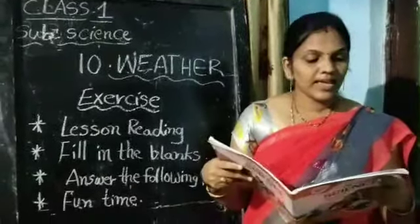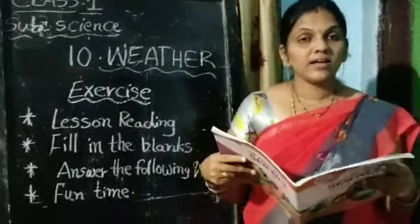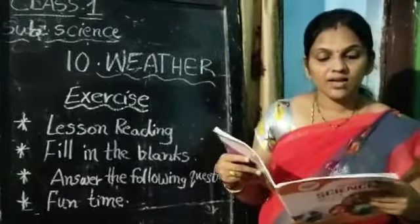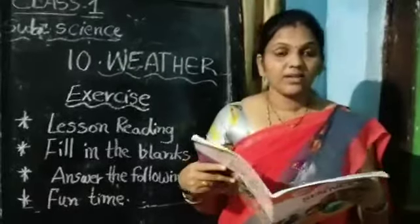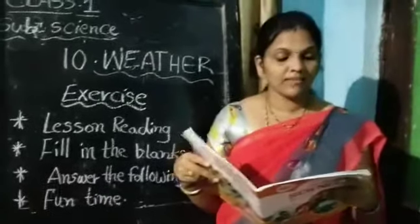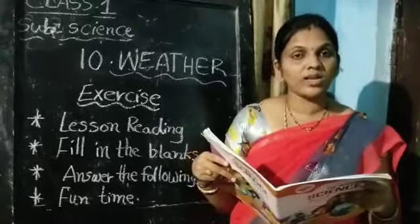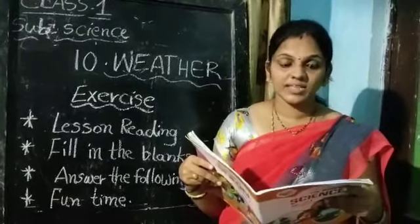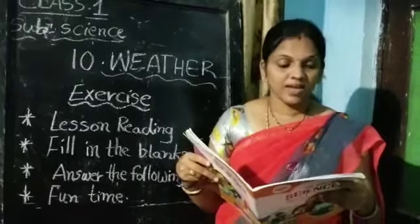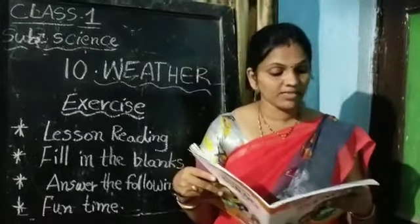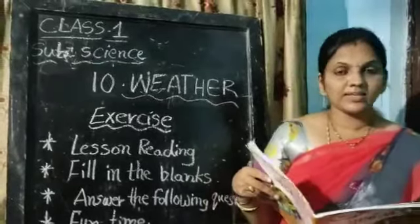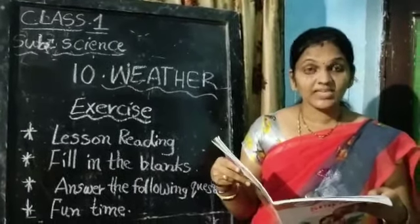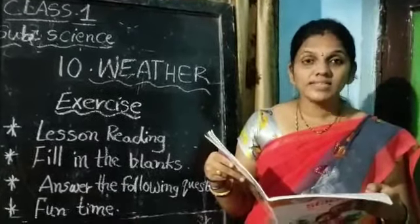The air around the earth is called weather. The sun, rain, and wind cause changes in weather. Weather changes from day to day. The weather is usually cold in the morning, hot at noon, and cold again in the evening and at night. Some days are hot, some days are cold. On some days it rains. A long and slow change in weather causes a season.